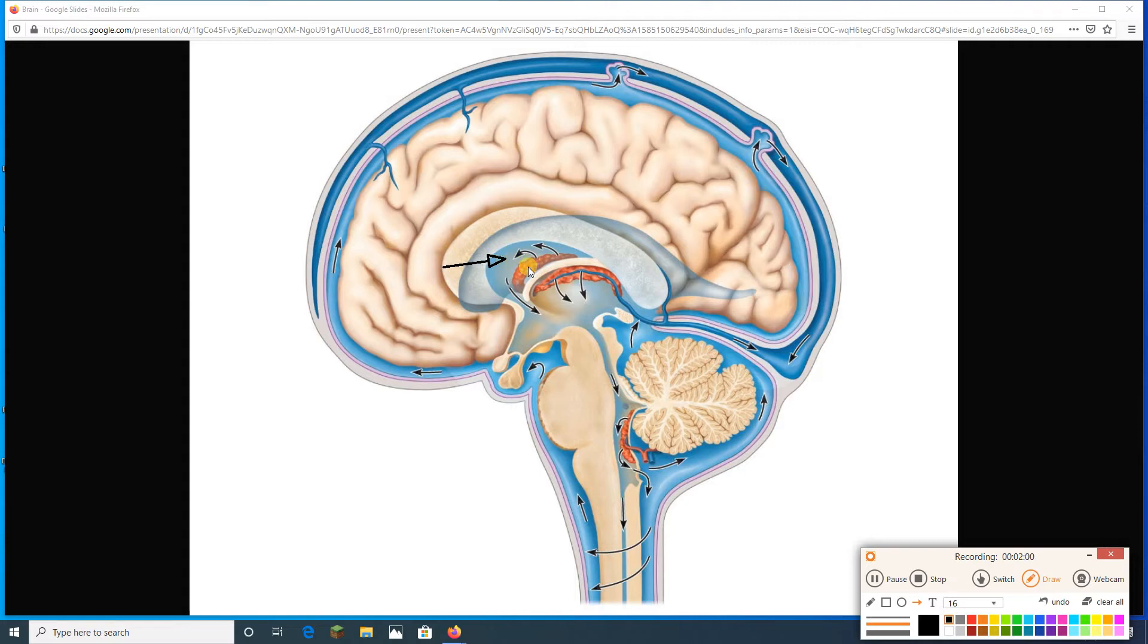Basically, we can think about every ventricle is making CSF. So they're showing us the lateral ventricle kind of behind the diencephalon right there. And in that lateral ventricle, we're going to make CSF. The CSF is going to flow into the third ventricle. Here's the third ventricle. Notice there's a choroid plexus in each of those. So the third ventricle makes its own CSF, plus it gets CSF from both laterals.